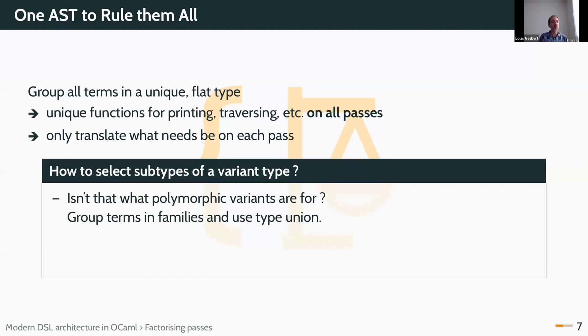There is an obvious way to do this, actually. OCaml provides polymorphic variants, which just allows you to do that. You could group your terms in families, like we did before. But instead of nesting them one step further, you can just use type union and have all your terms together. I don't know if this is used in big systems, but I would be interested.